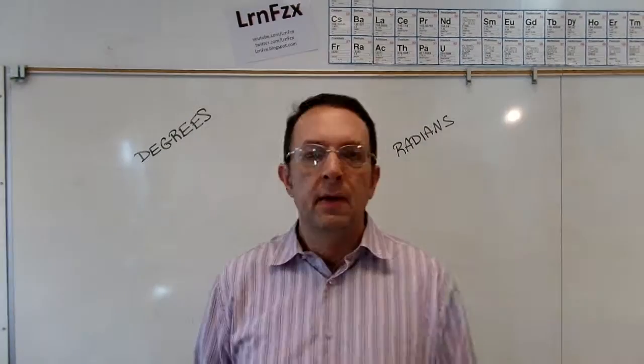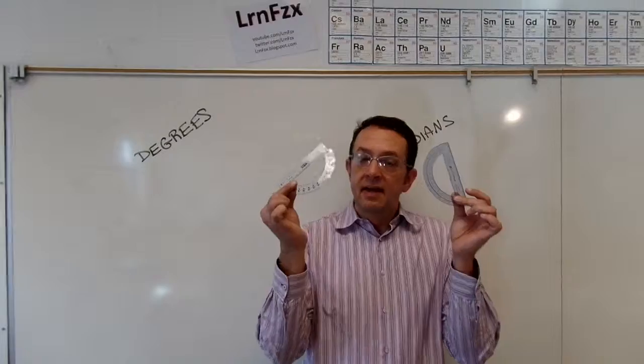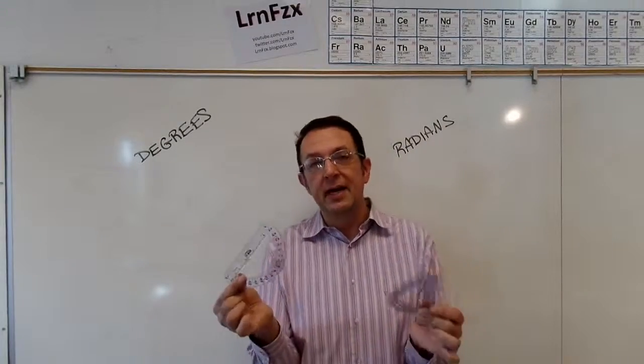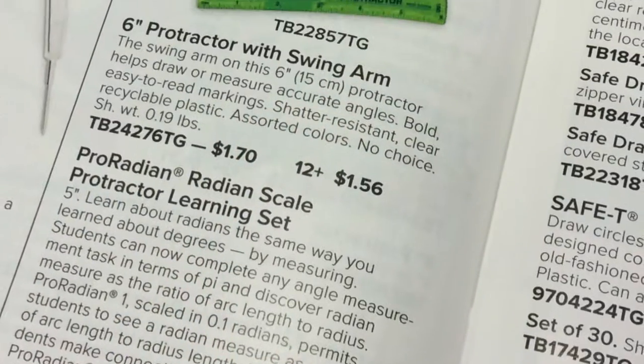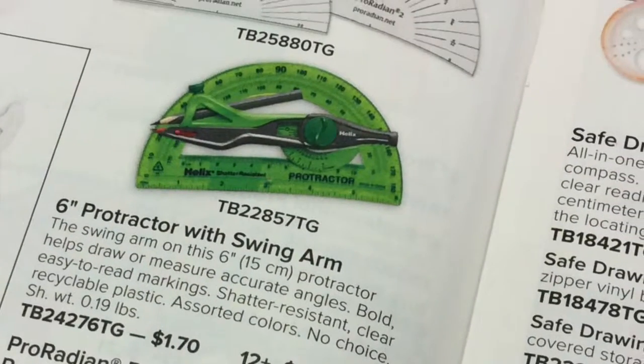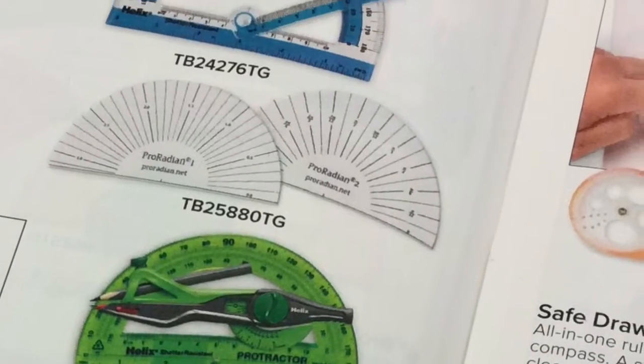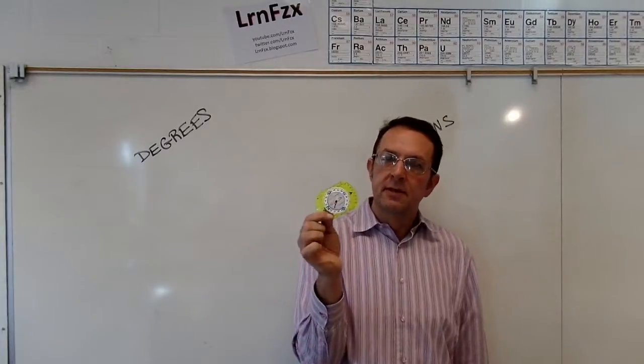Or pi? Because I've never seen, never even seen a protractor in radians. If you look at a math catalog, you can find them. They exist, but they're really uncommon. I've never seen a compass in radians.